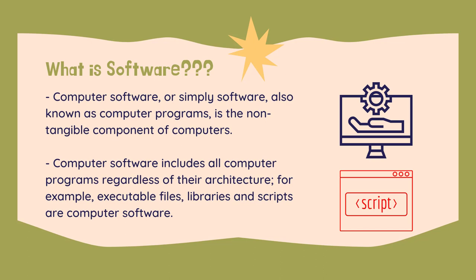Computer hardware and software require each other, and neither can be realistically used without the other. Computer software includes all computer programs regardless of their architecture. For example, executable files, libraries, and scripts are computer software.